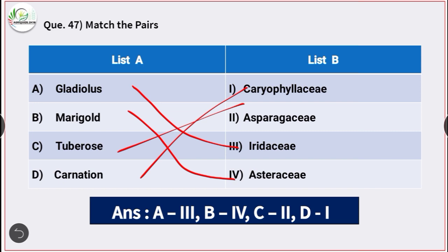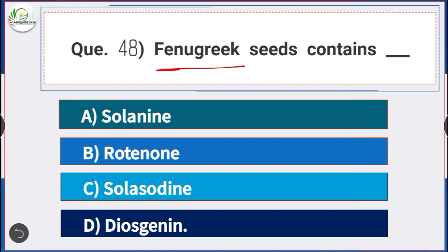Question number 48: Fenugreek seed contains — answer option D — diosgenin. Fenugreek seed contains diosgenin.